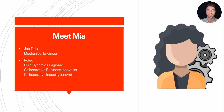Last up for the engineers, we have Mia. She is also a mechanical engineer and has the Fluid Dynamics Applied Engineer role, along with the Collaborative Business Innovator and Collaborative Industry Innovator. With the Fluid Dynamics Engineer role, she is able to take the CAD data and perform a fluid flow analysis on it to ensure that it will function properly given typical wind conditions that you would find in a consumer area.